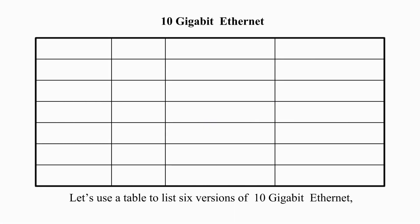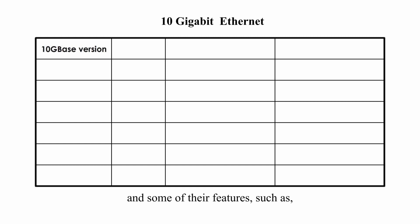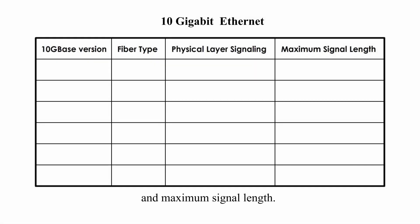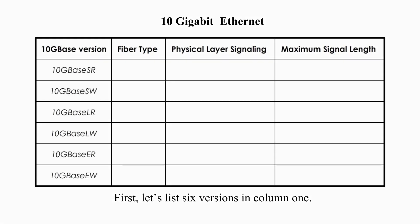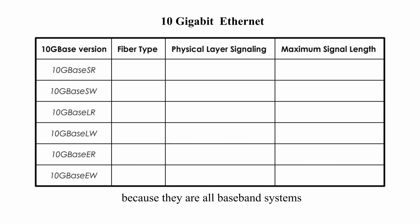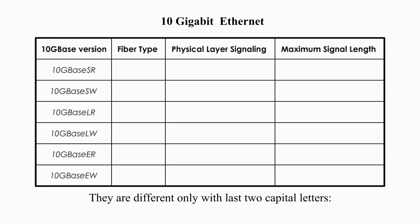Let's use a table to list six versions of 10 Gigabit Ethernet and some of their features, such as fiber type used, physical layer signaling, and maximum signal length. All of these six versions have '10GBase' in their names because they are all baseband systems with the speed up to 10 Gigabits per second. They differ only in the last two capital letters.